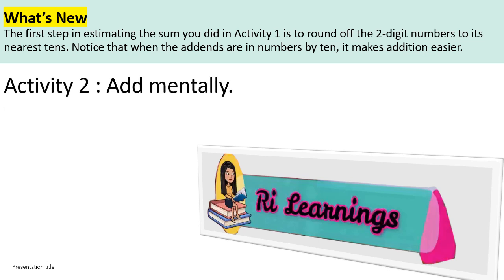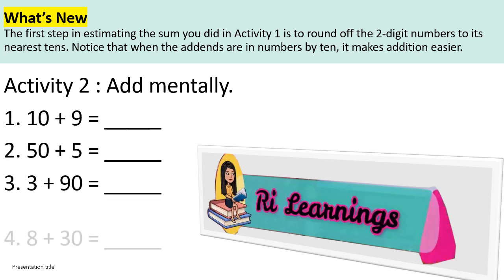Activity 2: Add mentally. 1. 10 plus 9 equals, 2. 50 plus 5 equals, 3. 3 plus 90 equals, 4. 8 plus 30 equals, 5. 70 plus 7 equals.